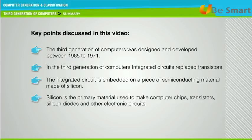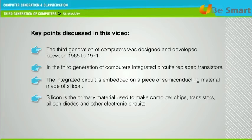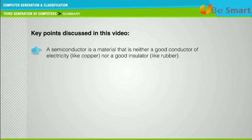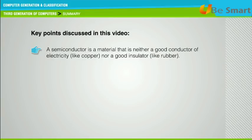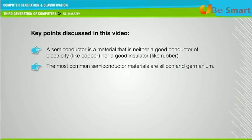Silicon is the primary material used to make computer chips, transistors, silicon diodes, and other electronic circuits. A semiconductor is a material that is neither a good conductor of electricity like copper, nor a good insulator like rubber. The most common semiconductor materials are silicon and germanium.